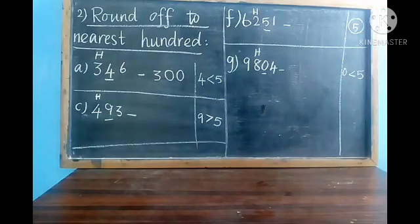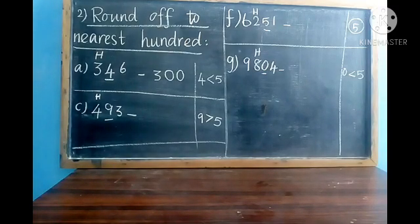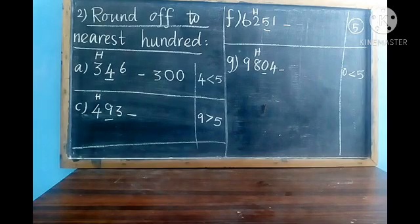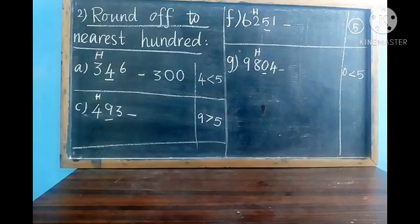Number 2: Round off the numbers to nearest 100. To round off to nearest 100, write H above the digit in the hundreds place. If we want to round off to nearest 100, we underline the next digit — the next digit of hundreds is the tens place value. So underline the tens place value. A equals 346: 6 is in ones place, 4 is in tens place, 3 is in hundreds place.